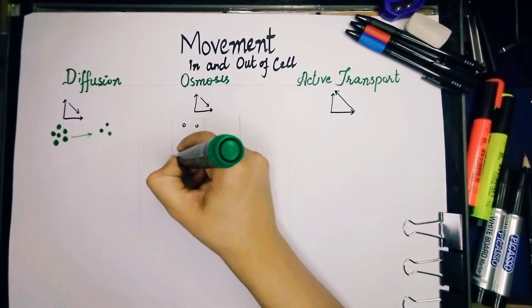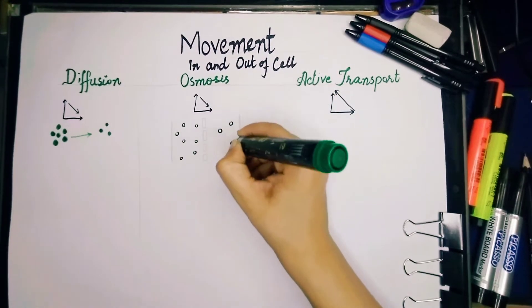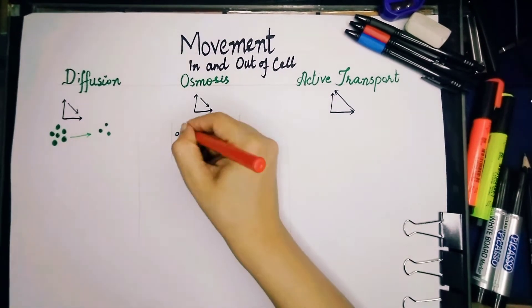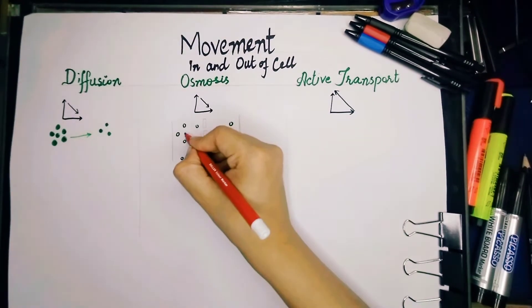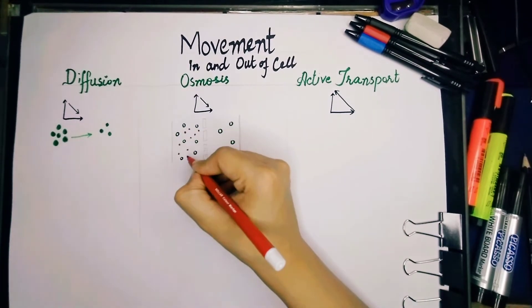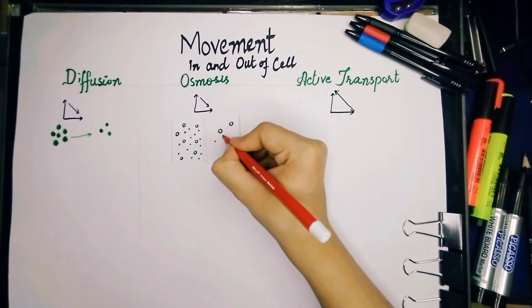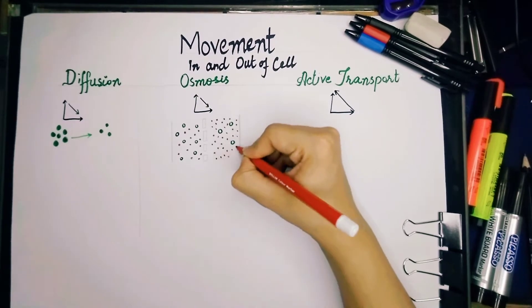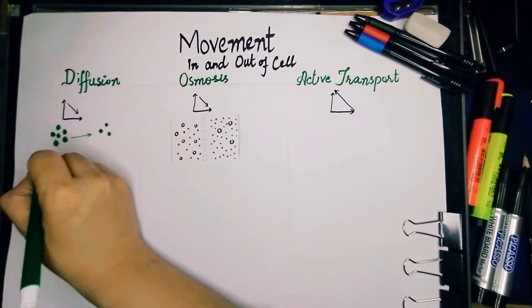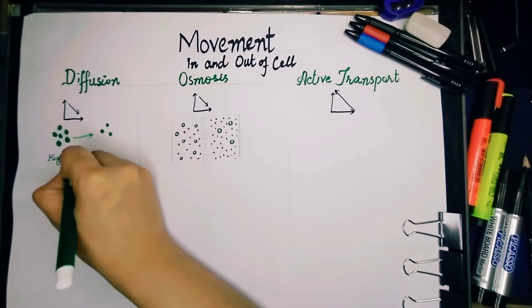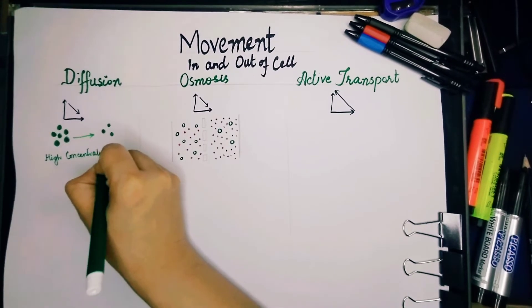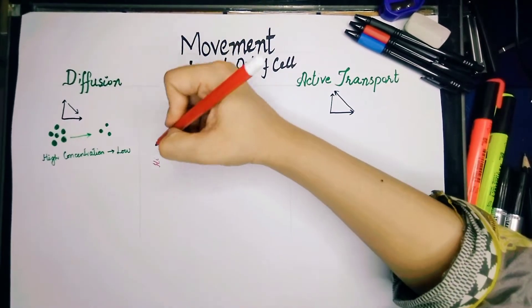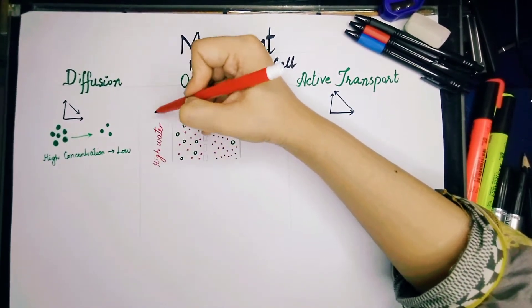But if we talk about osmosis, we can see that in this beaker, if we separate it with the cell membrane or you can say a partially permeable membrane, which is having certain holes in between it, how the movement takes place. You can see on the right side, there are more number of red dots, which are representing a very small molecule, whereas the left side is representing higher water potential.